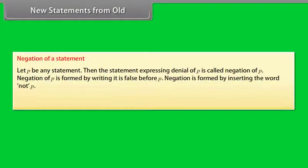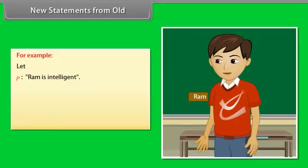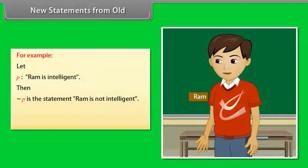New statements from old. Negation of a statement: let P be any statement. Then, the statement expressing denial of P is called negation of P. Negation of P is formed by writing 'it is false' before P. Negation of statement P is denoted as not P. For example, let P be the statement 'Ram is intelligent.' Then, not P is the statement 'Ram is not intelligent,' or 'it is false that Ram is intelligent.'